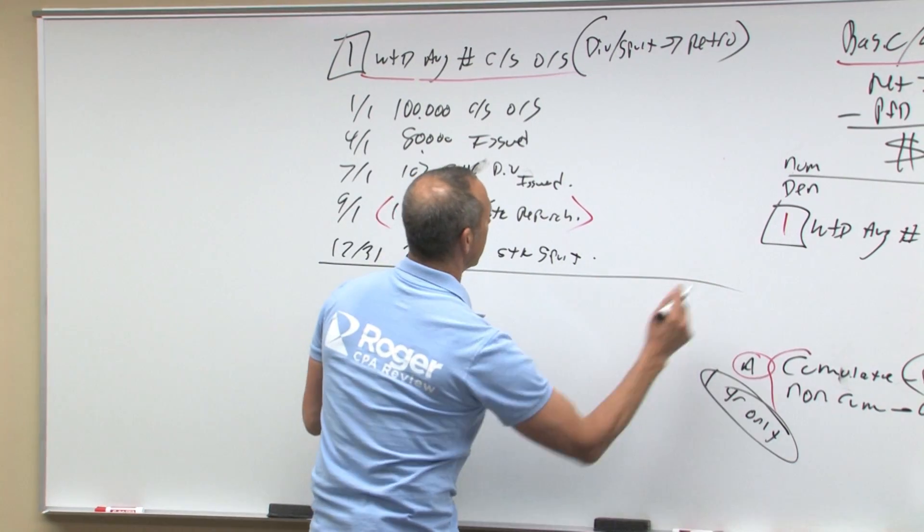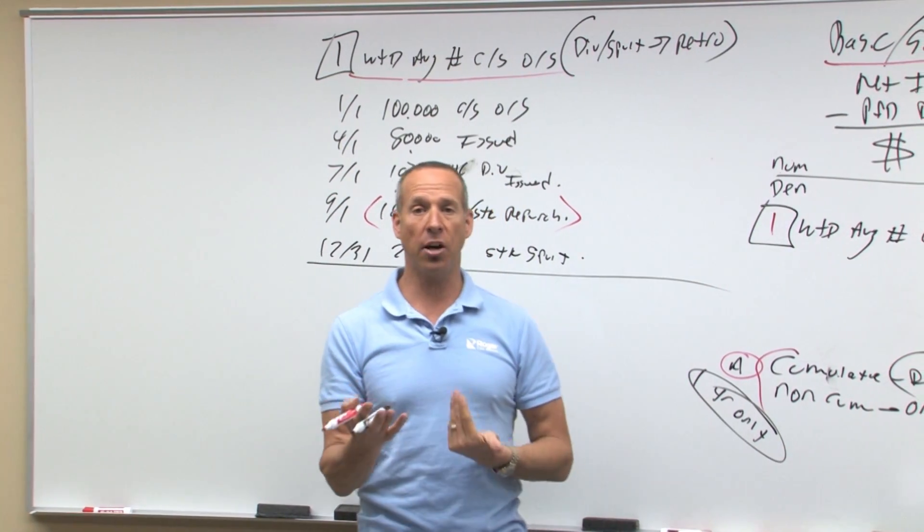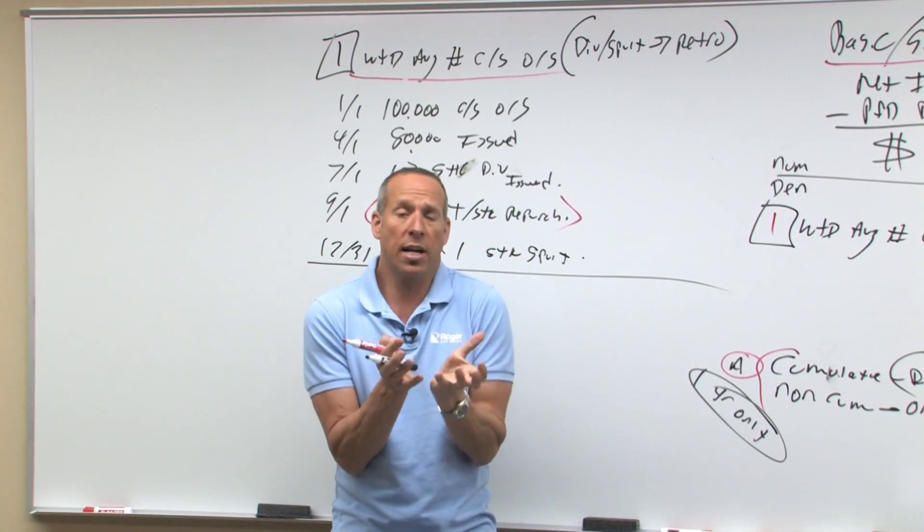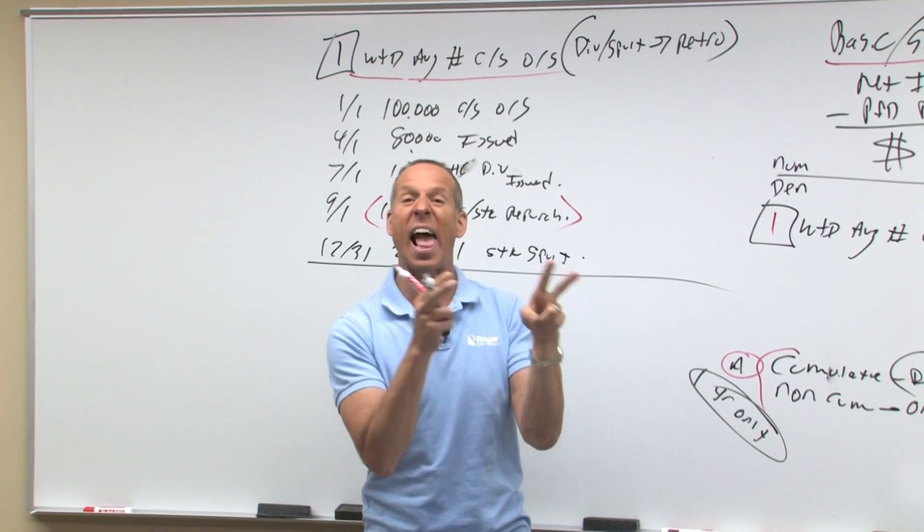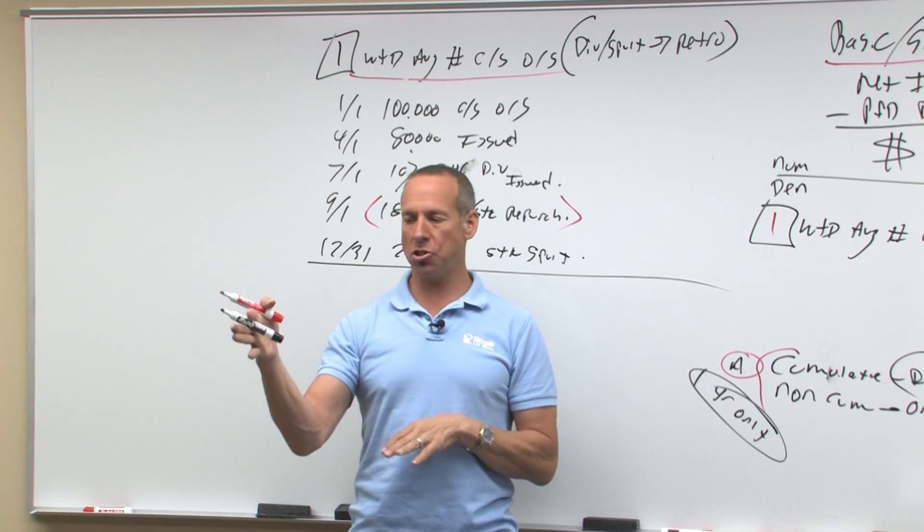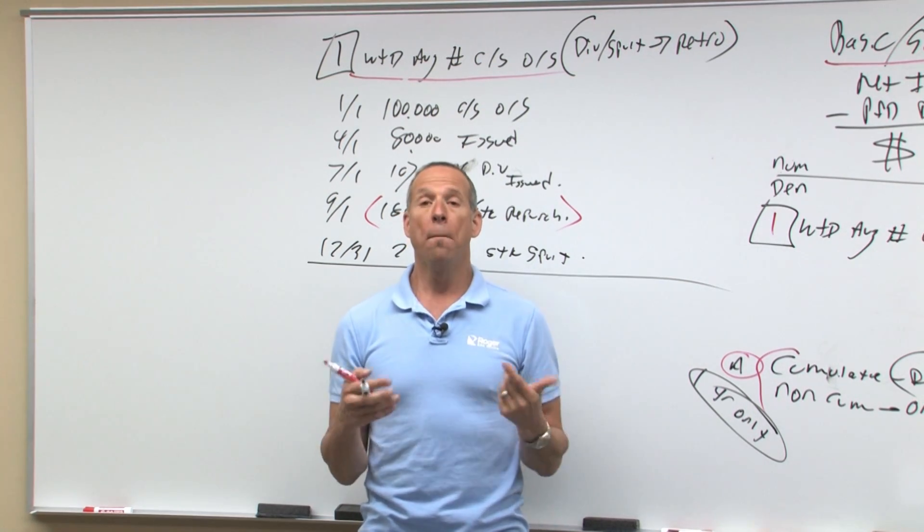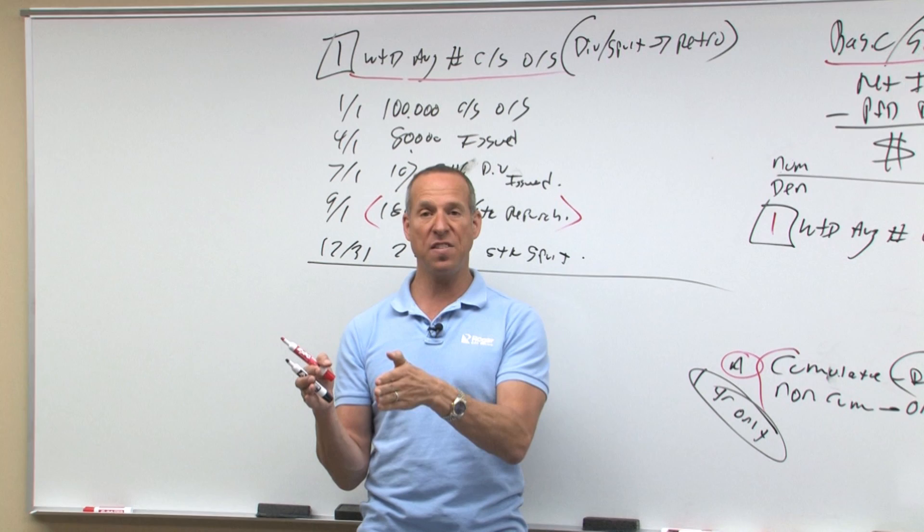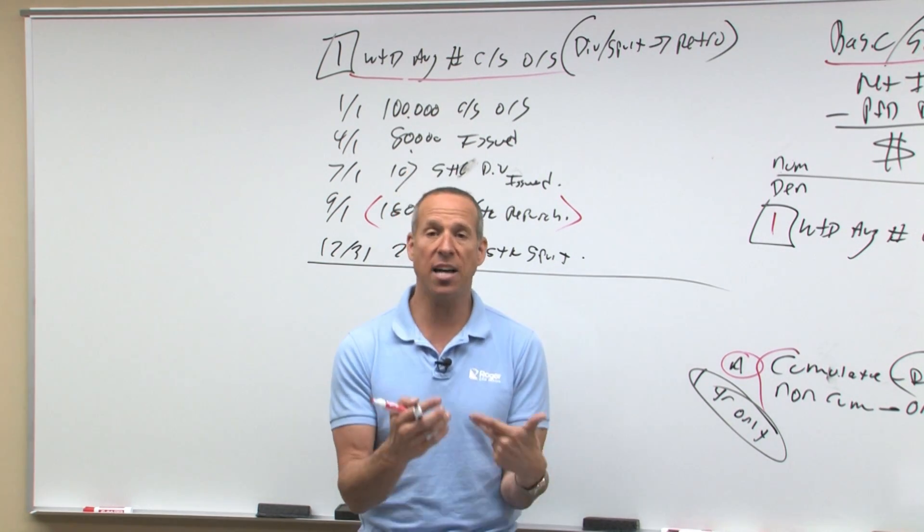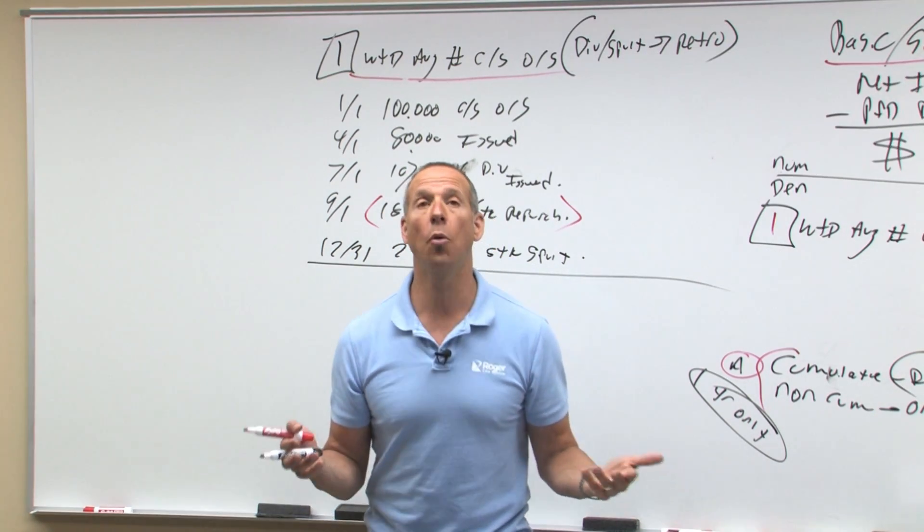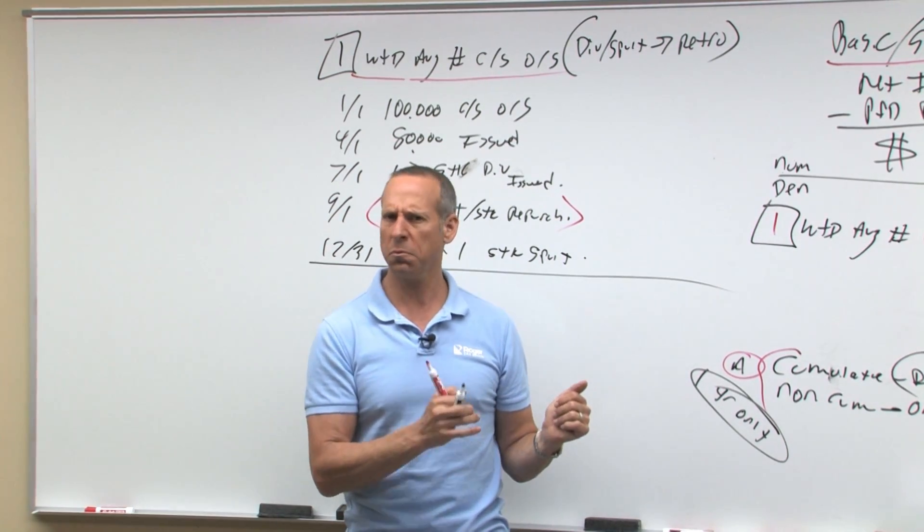So how many shares do we have outstanding? What is our weighted average? Now remember, weighted average is different than shares outstanding, because you may have the share outstanding, but on average it wasn't outstanding the whole year. If I have 100,000 shares outstanding on January 1st, how many do I have outstanding the whole year? 100,000. But if I had 100,000 outstanding all year and 50,000 outstanding for half a year, the 50,000 isn't 50, it's 25,000, because on average it's as if you had 25 all year if you had 50 for half a year.